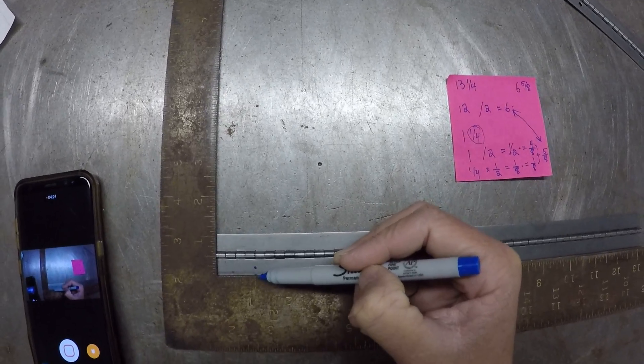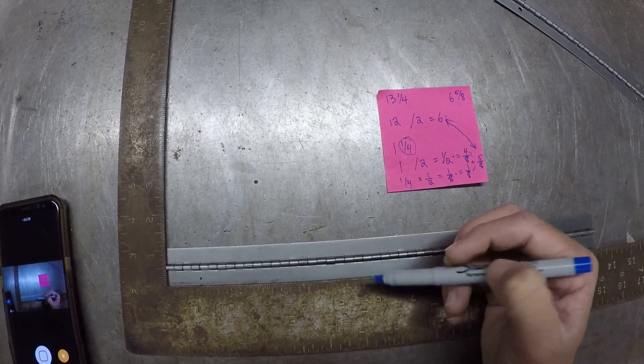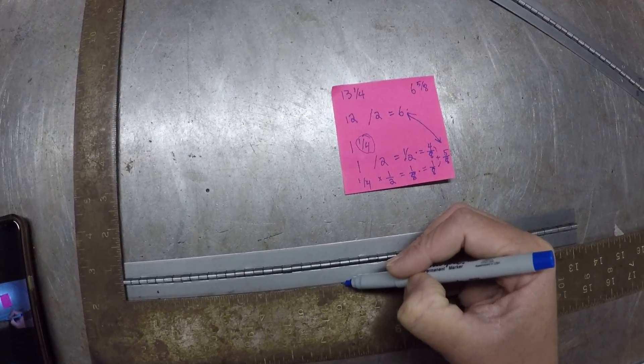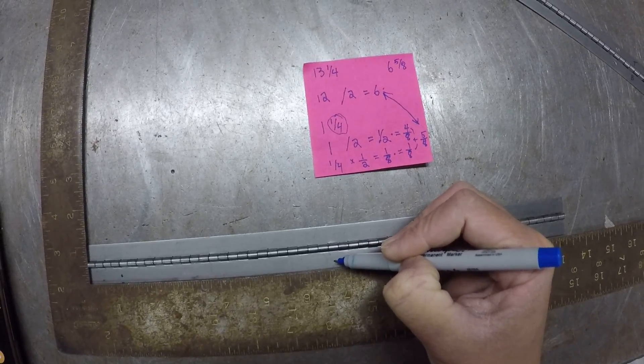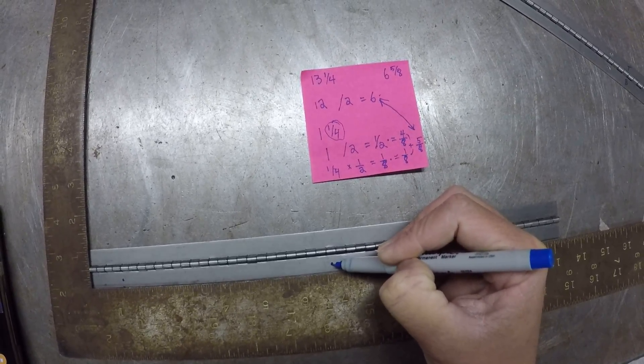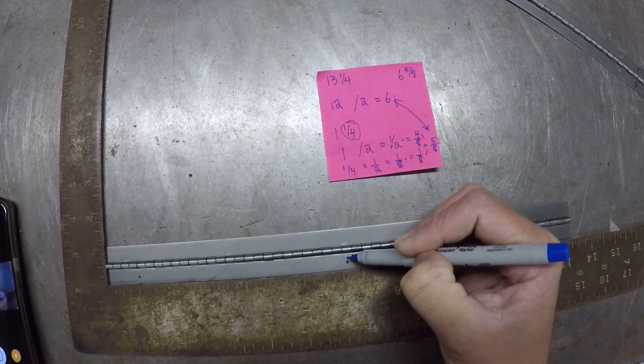Next I need to go two, three, four, five, six inches and one, two, three, four, five eighths, and I'm going to put a dot in the middle of this piece of metal here.